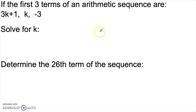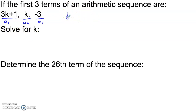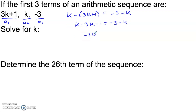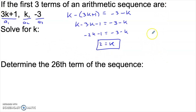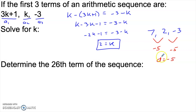Here's an arithmetic sequence where the first three terms are given as expressions. We have a sub one, a sub two, and a sub three, and we need to solve for k. We know they must have a common difference, so if I take k and subtract 3k plus 1, that has to equal negative 3 minus k. Solving this algebra gives k equal to 2. We can check: if k is 2, then 3k plus 1 is 7, k is 2, and the third term is negative 3. The differences are both negative 5, confirming this is arithmetic with common difference negative 5.